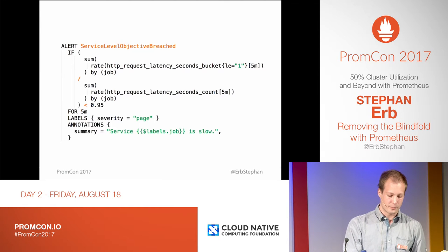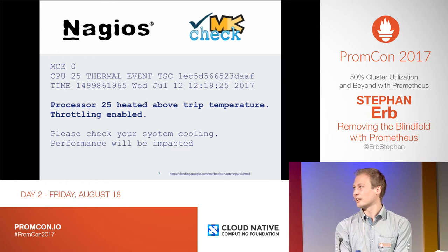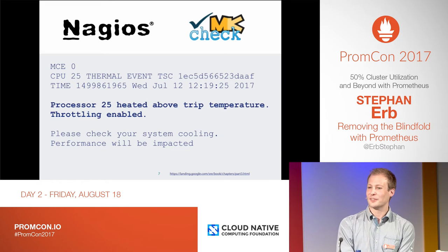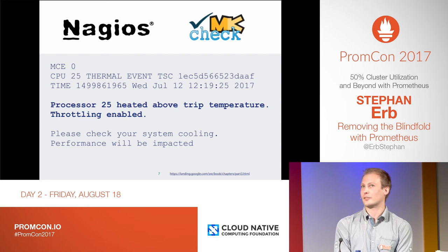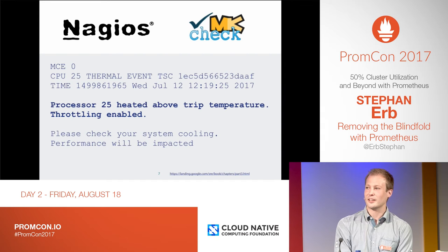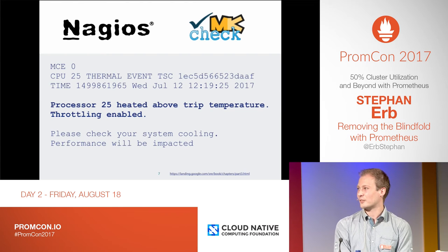The last thing that helped us quite a bit — and this is funny — is Nagios. We ended up overheating quite a few of our nodes and the CPUs throttled down. We might not have discovered that so fast without the Nagios check, which is kind of funny. You could also get that data from Prometheus, but we just had an alert set up to check for it.